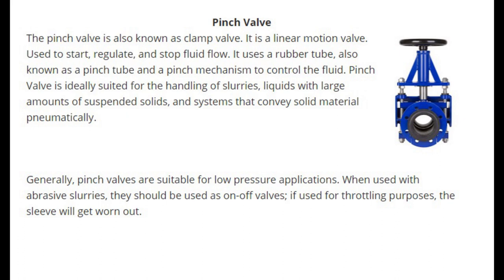The pinch valve, also known as a clamp valve, is a linear motion valve used to start, regulate, and stop fluid flow. It uses a rubber tube, also known as a pinch tube, and a pinch mechanism to control the fluid. Pinch valves are ideally suited for handling slurries, liquids with large amounts of suspended solids, and systems that convey solid material pneumatically. They are suitable for low-pressure applications. When used with abrasive slurries, they should be used as on-off valves; if used for throttling purposes, the sleeve will get worn out.